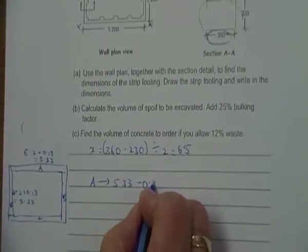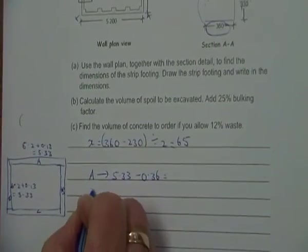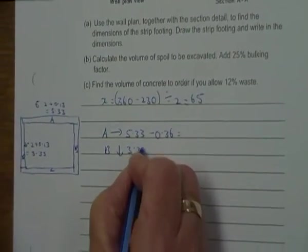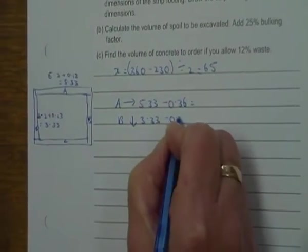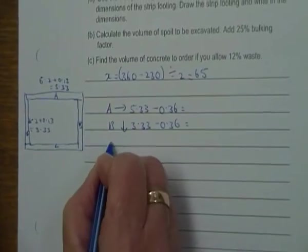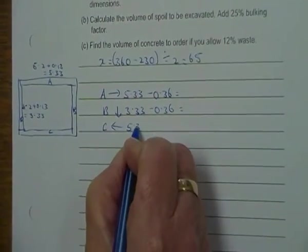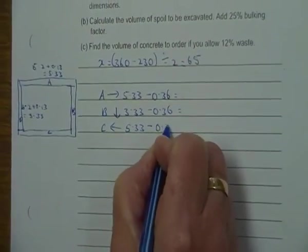B, I'm coming down, it's 3.33 minus 0.36. C going across is 5.33 minus 0.36.